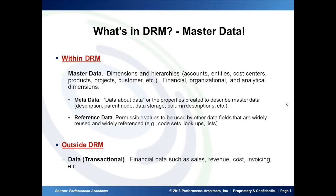Associated with that master data, we have metadata — or data about data. These are the properties and attributes which go along with the master data. We also have code lists, lookups, and code sets, which is your reference data — the data that's assigned to the property field within DRM.